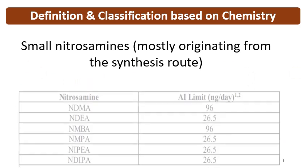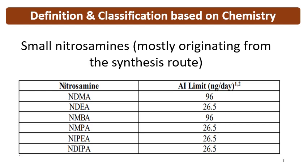Small Nitrosamines mostly originate from the synthesis route. The important and identified Nitrosamine impurities are given in various guidance documents. The present table is taken from the US FDA guideline, which lists different Nitrosamine impurities like NDMA, NDEA, NMBA, NMPA, NIPEA, and NDIPA, with their respective acceptable intake limits given in nanogram per day. These are very potent impurities — that's why the limits are very stringent. The lowest limit is 26.5 nanogram per day, and these are based on the maximum daily dose.